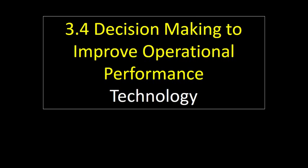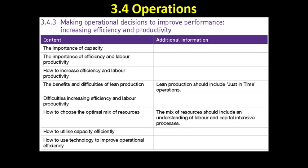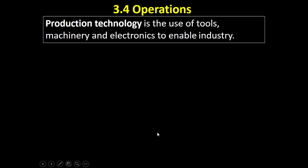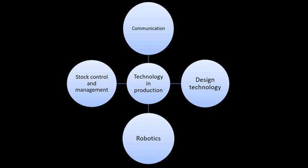This video is on technology — the final part of section 3.4.3: increasing efficiency and productivity. We're talking about production technology, which is the use of tools, machinery and electronics to enable industry.